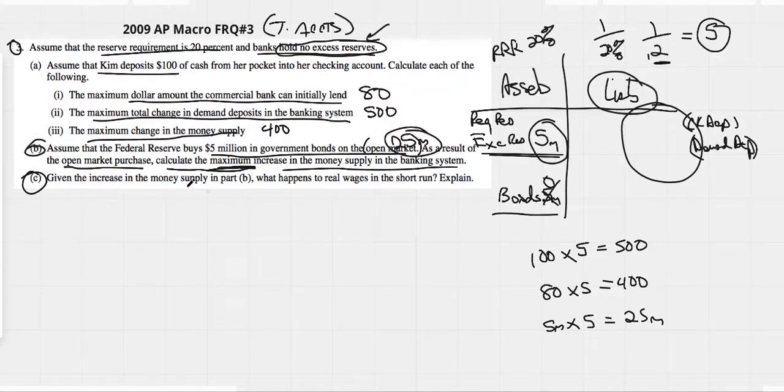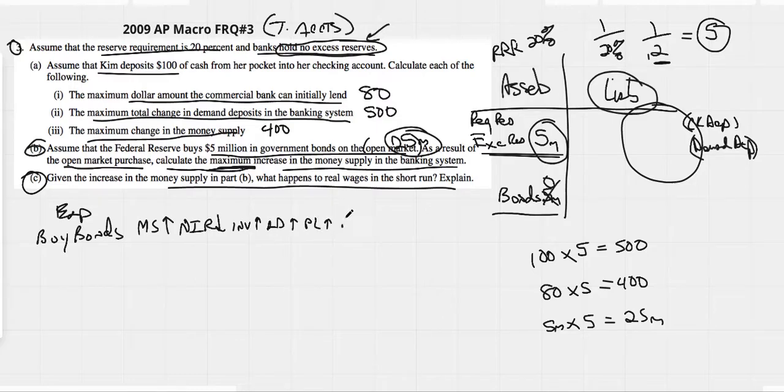All right, given the increase in the money supply, what happens to real wages in the short run? So what we know is that when the Fed buys bonds, that's expansionary. We know that the money supply is going to increase. This is going to make nominal interest rates go down. This is going to make investment go up. This makes aggregate demand go up. That makes price level go up. That makes real GDP go up. That makes output go up. And that would make unemployment go down. This is our causal chain of thinking for a monetary expansionary policy, usually to get us out of a recession.